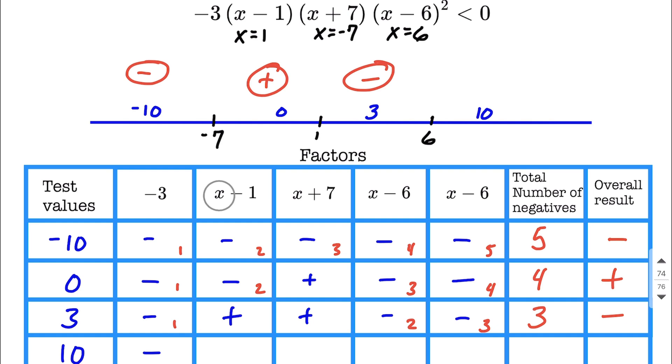Then let's test. We have positive 10 minus 1 makes positive 9, positive 10 plus 7, positive 17, positive 10 minus 6, positive 4. And the same thing in that last one because it's the same exact factor. Now counting up our total number of negatives, we have 1 in this section. Well, 1 negative multiplied by a bunch of positives is overall going to be a negative result.